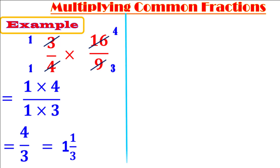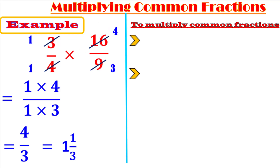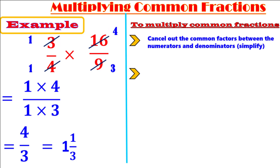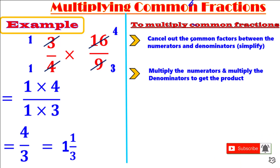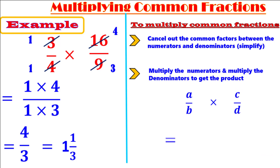Don't forget: to multiply common fractions we have two steps. The first step: cancel out the common factors between numerators and denominators — that is, simplify. The second step: multiply the numerators and multiply the denominators to get the product. In other words, if we have a over b times c over d, just multiply the two numerators — a times c — over b times d, to get ac over bd.